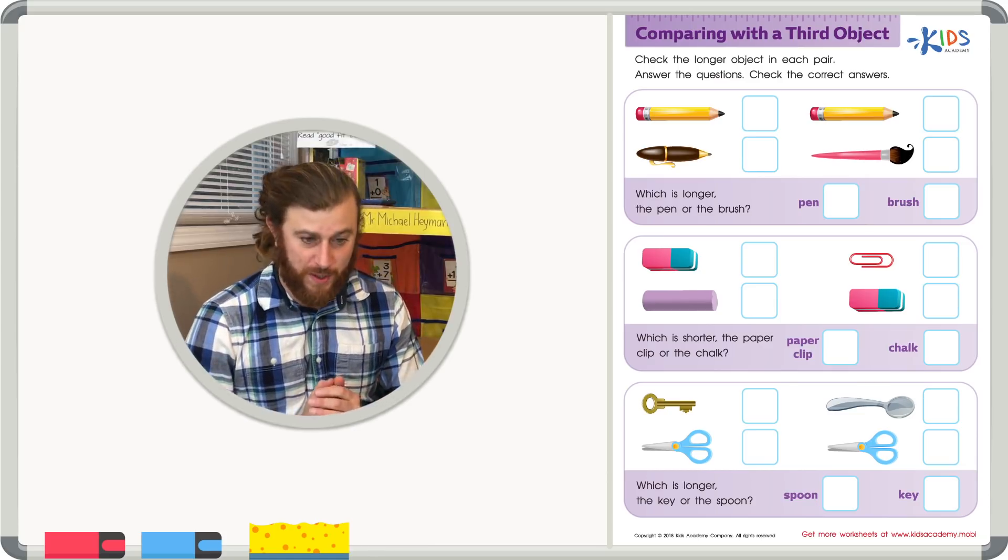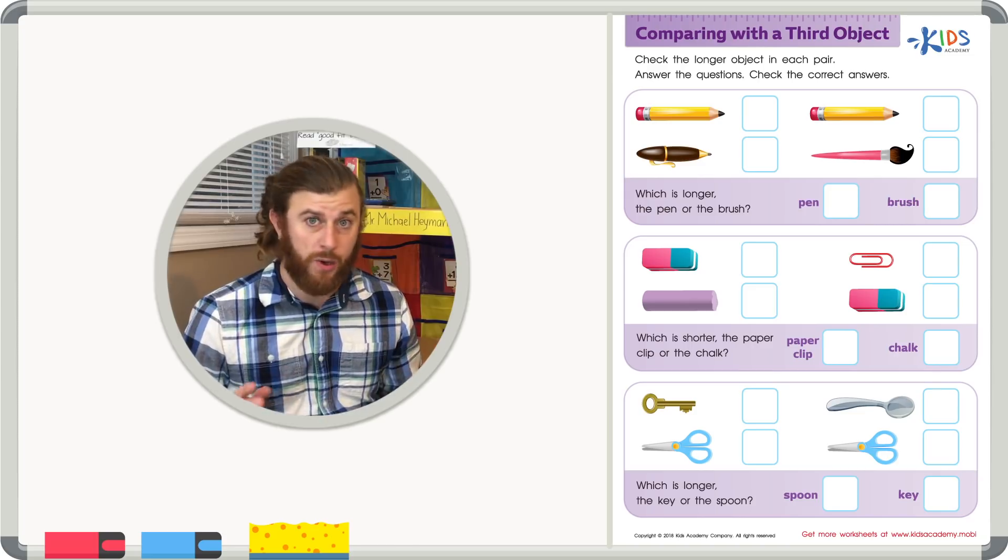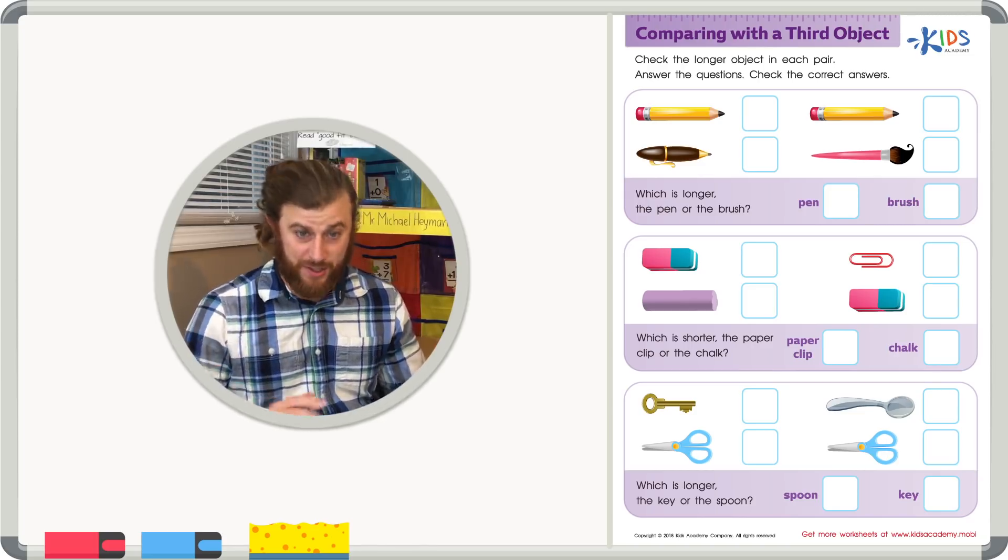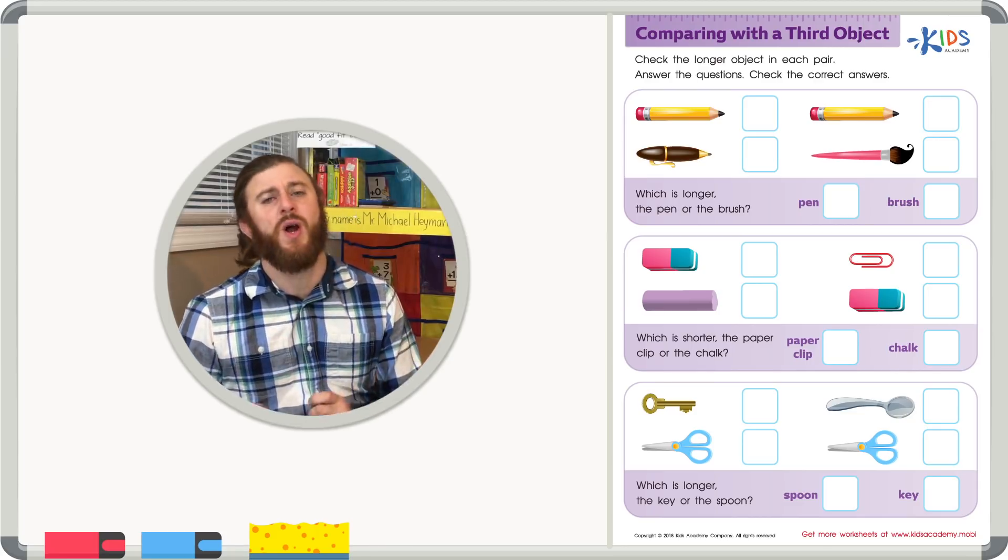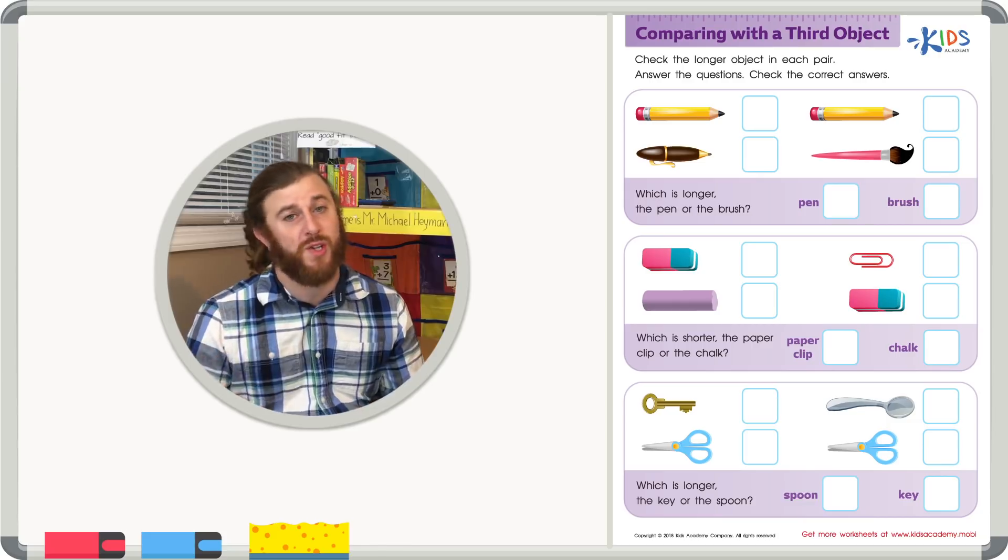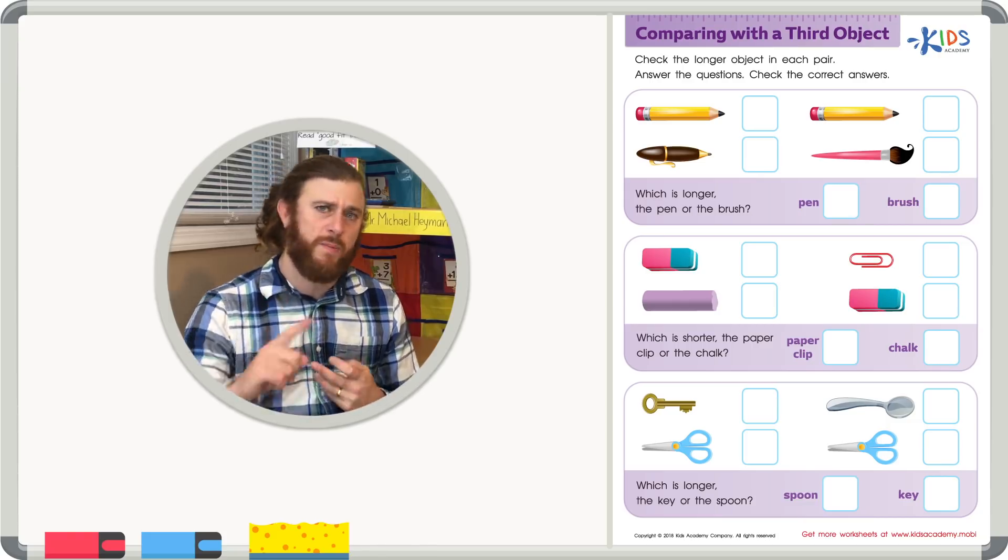Let's read the directions. Comparing with a third object. Check the longer object in each pair. Answer the questions and check the correct answers. First, we're just going to look at two different sets of objects. We're going to see which one's longer. After that, we're going to have to answer some questions based on the pictures we saw.